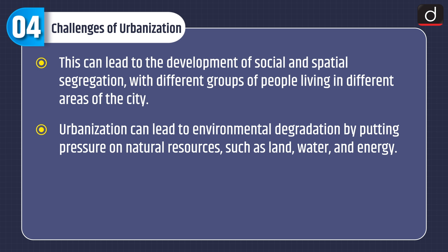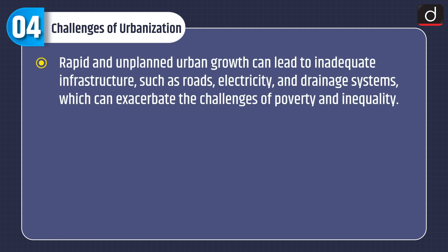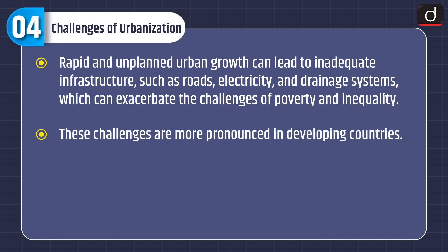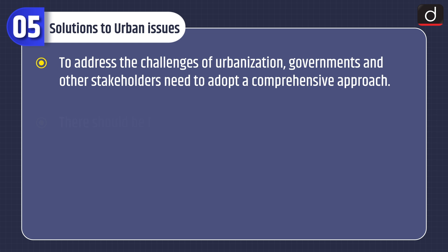Urbanization can lead to environmental degradation by putting pressure on natural resources such as land, water, and energy. Cities consume large amounts of energy and water, leading to increased greenhouse gas emissions, air pollution, and water scarcity. Rapid and unplanned urban growth can lead to inadequate infrastructure such as roads, electricity, and drainage systems, which can exacerbate the challenges of poverty and inequality. These challenges are more pronounced in developing countries, where urbanization is often characterized by rapid and unplanned growth, inadequate infrastructure, and weak governance.